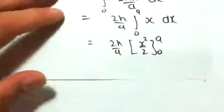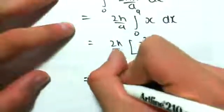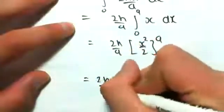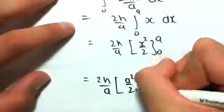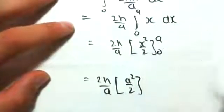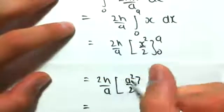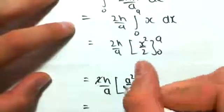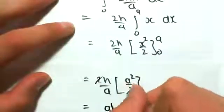So substituting in for that, we would have 2h on a, outside of a squared on 2 minus 0, so that's just going to be 0. If we wanted to simplify this, we would have those 2s would go and we'd be left with a h.